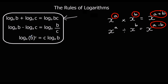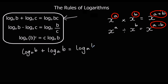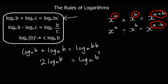Finally, log base a of b to the power of c can be written as c times log base a of b — the power jumps to the front. For example, log base a of b squared equals two lots of log base a of b, which is exactly like adding log base a of b plus log base a of b.